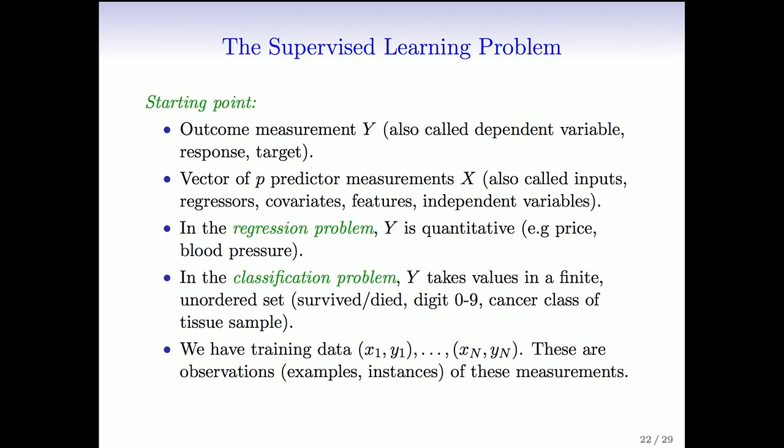We distinguish two cases. One is the regression problem, where y is quantitative, such as price or blood pressure. In the classification problem, y takes values in a finite, unordered set, such as survived or died, the digit class of 0 to 9, or the cancer class of the tissue sample.